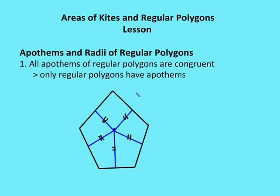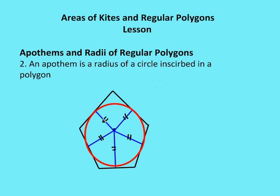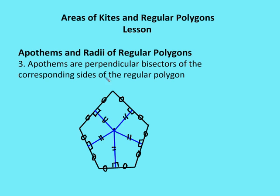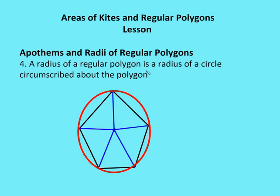Some things to know about radii and apothems. First, all apothems of a regular polygon are congruent — and only regular polygons have apothems. Second, an apothem is a radius of a circle inscribed in the polygon — that inscribed circle's radius is the apothem. Third, apothems are perpendicular bisectors of the corresponding sides of the regular polygon — they form right angles and bisect the opposite side. Fourth, the radius of a regular polygon is the radius of a circle circumscribed about the polygon.